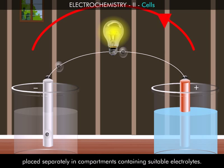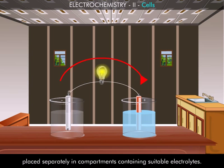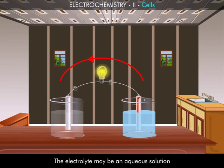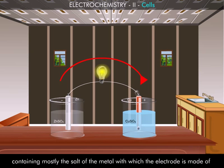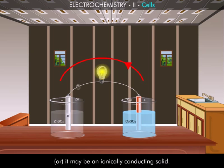The electrolyte may be an aqueous solution containing mostly the salt of the metal with which the electrode is made of or it may be an ionically conducting solid.